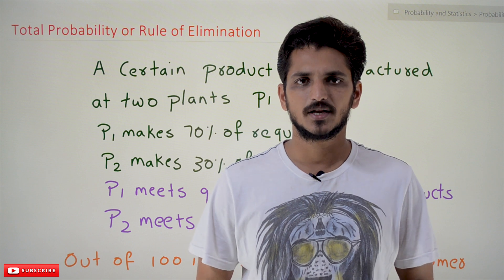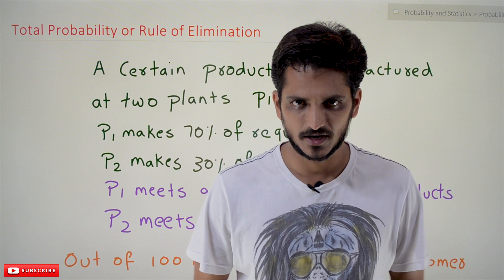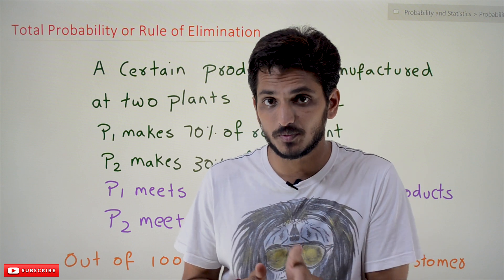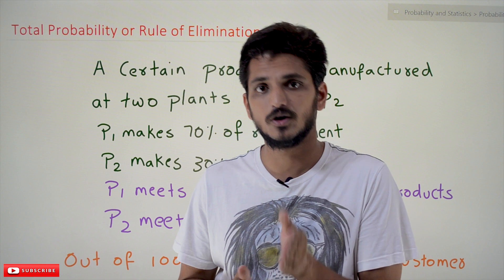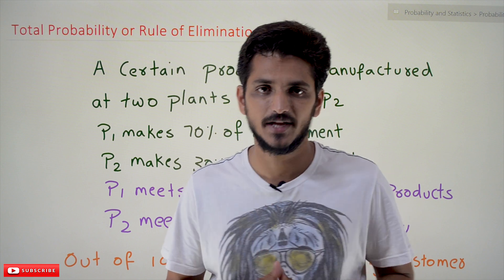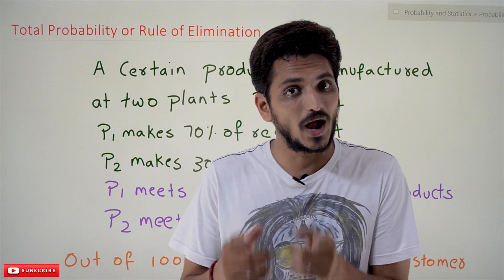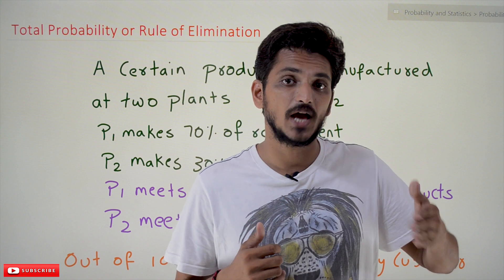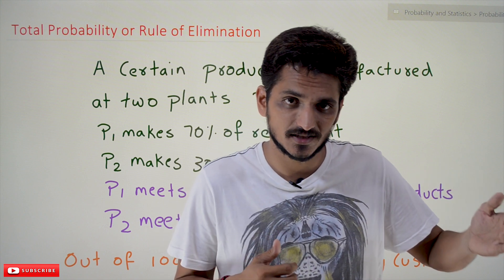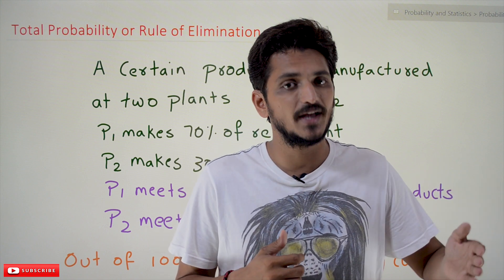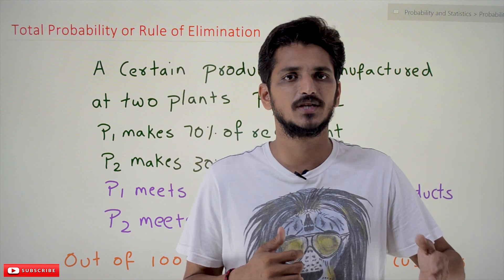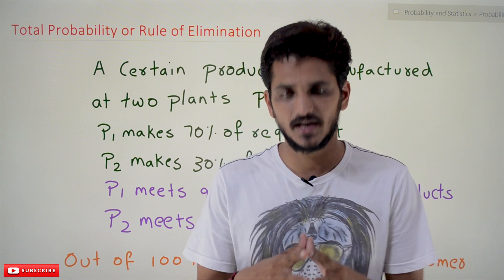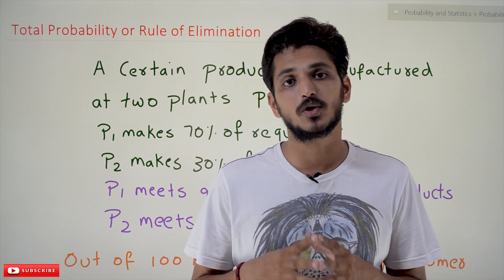Hi, welcome to Learning Monkey. I am Raghu. In this class we will discuss about the Total Probability Rule, also known as the Rule of Elimination. In order to understand this class, in our previous classes we have already discussed about independent events and mutually exclusive events — please watch those classes and come back here. The link for the playlist is provided in the description below.